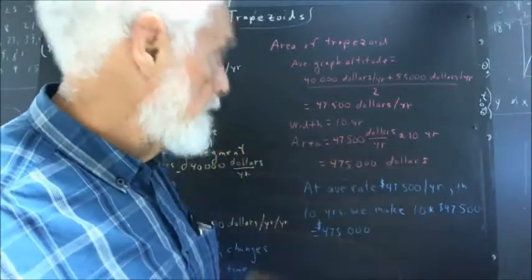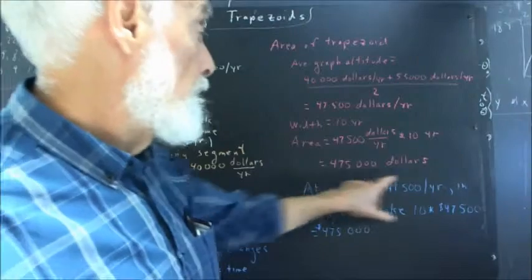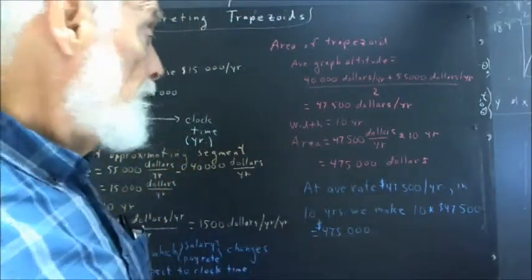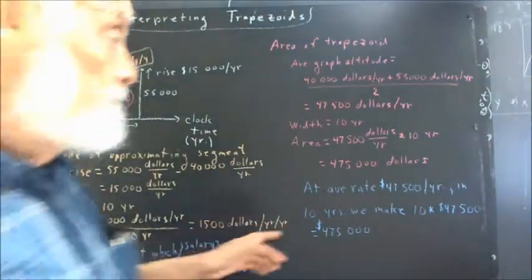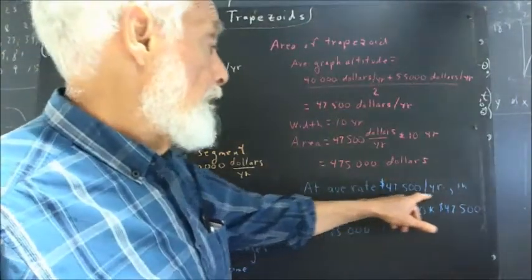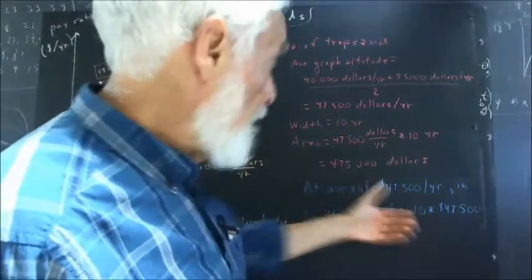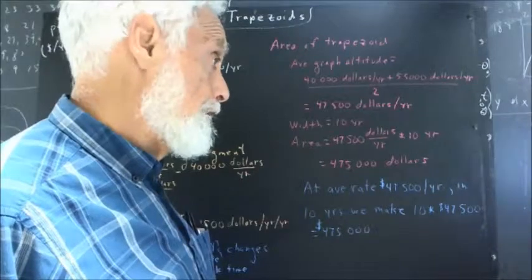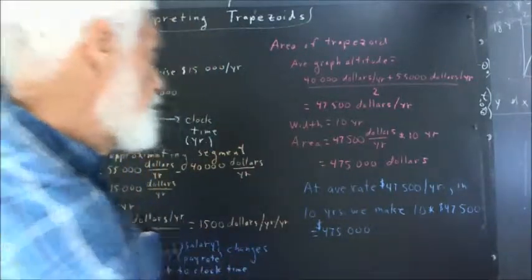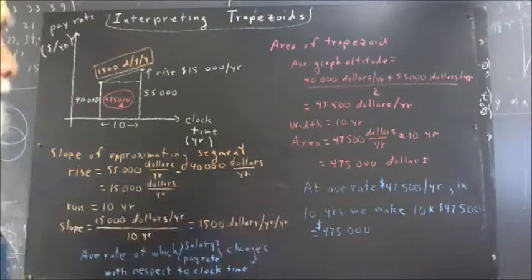And, of course, $47,500 times 10 is $475,000. So we get $475,000, meaning this is pretty easy to ascertain. At an average rate of $47,500 per year, in 10 years, we should make 10 times $47,500 or $475,000. And that agrees with our more formal calculation of the area.